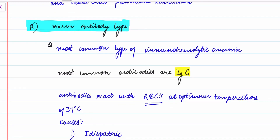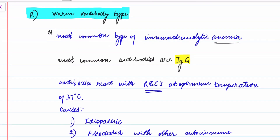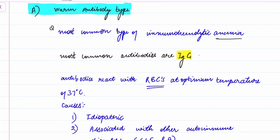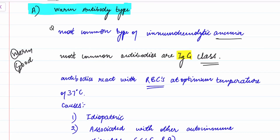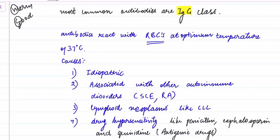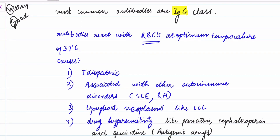The most common immunohemolytic anemia is the warm antibody type. The antibodies here are IgG class antibodies. To remember this, the mnemonic is 'warm weather is good' — so you will never confuse what type of antibodies are produced in this type of anemia.